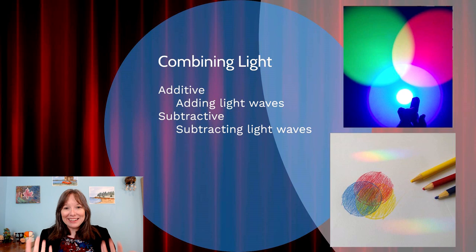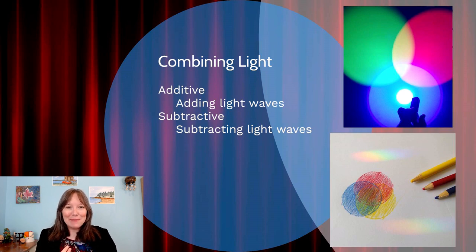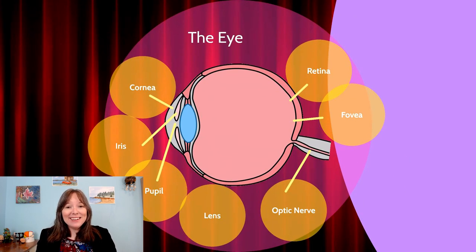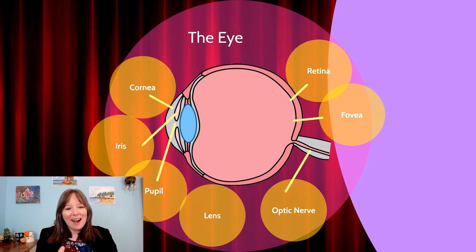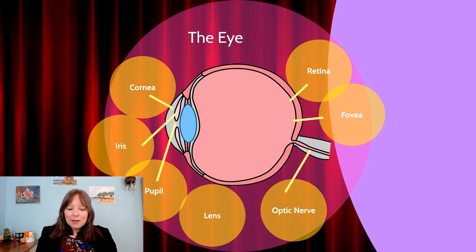Now that we've discussed some basics of how light works and how absorption versus reflection can impact our eye, let's talk about the eye. The eye is a fascinating organ that has evolved in really neat ways. For the purpose of this course, we're going to limit our discussion to the cornea, iris, pupil, lens, retina, fovea, and optic nerve.